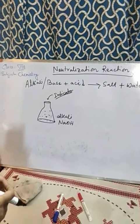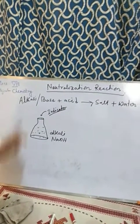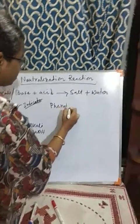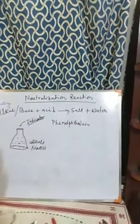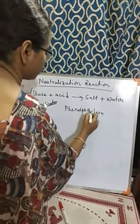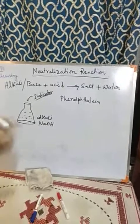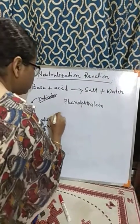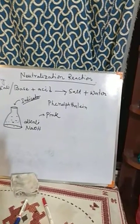Here we use the indicator called phenolphthalein. We add phenolphthalein to the alkali. In alkali or basic medium, phenolphthalein is pink in color, so the whole solution will turn pink.